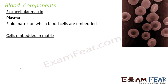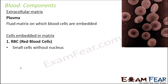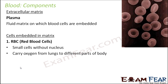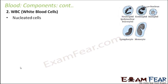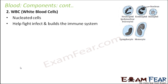The cells embedded in the plasma matrix are the blood cells, which are of different types. RBCs, or red blood cells, are without a nucleus and carry oxygen from the lungs to different parts of the body. WBCs, or white blood cells, are nucleated cells that help fight infection and build the immune system. White blood cells live for only three to four days, which is very short compared to red blood cells, and then they are destroyed and new WBCs are formed.